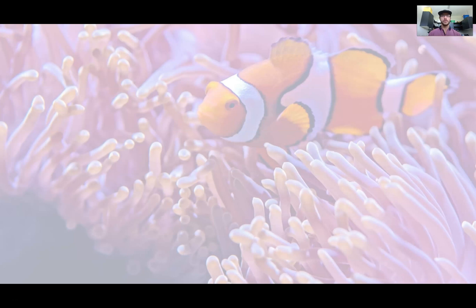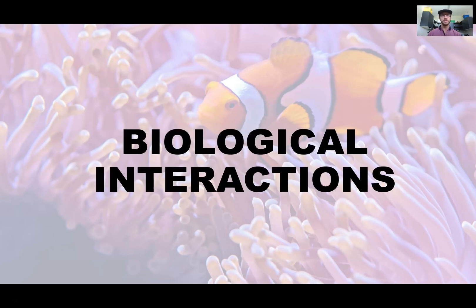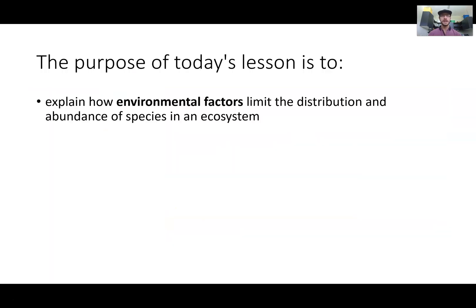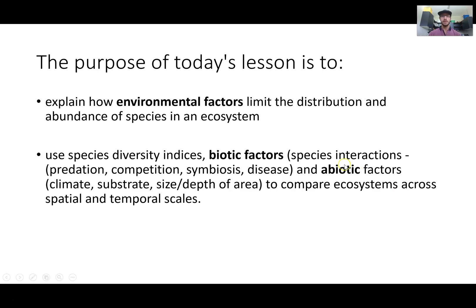Hey guys, welcome back to the fourth video. Today's topic is on biological interactions. You can find this in the textbook. We finished up chapter 2, and chapter 3 is on looking at interactions of species with other living things and with their physical surroundings. We'll also look at how ecosystems can be measured to determine their health. The purpose of today's lesson is to look at how biotic and abiotic factors limit the distribution of species in an ecosystem.